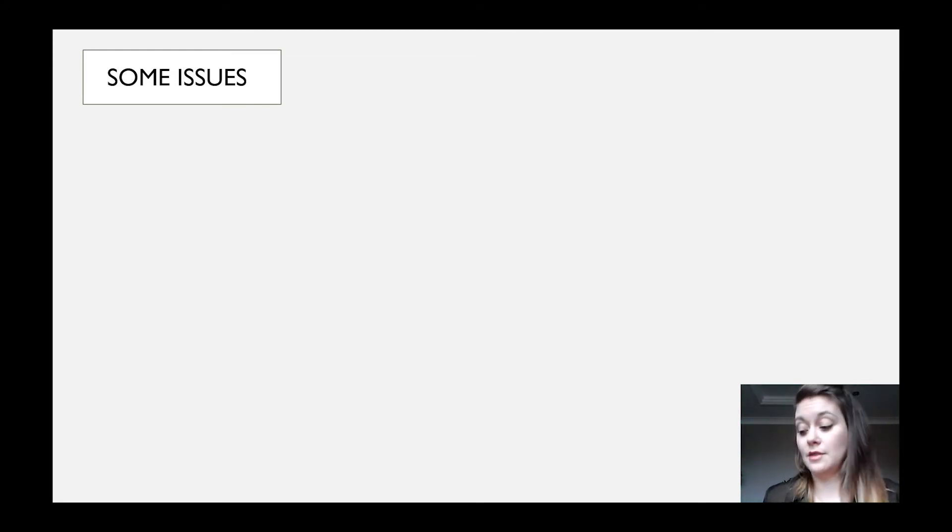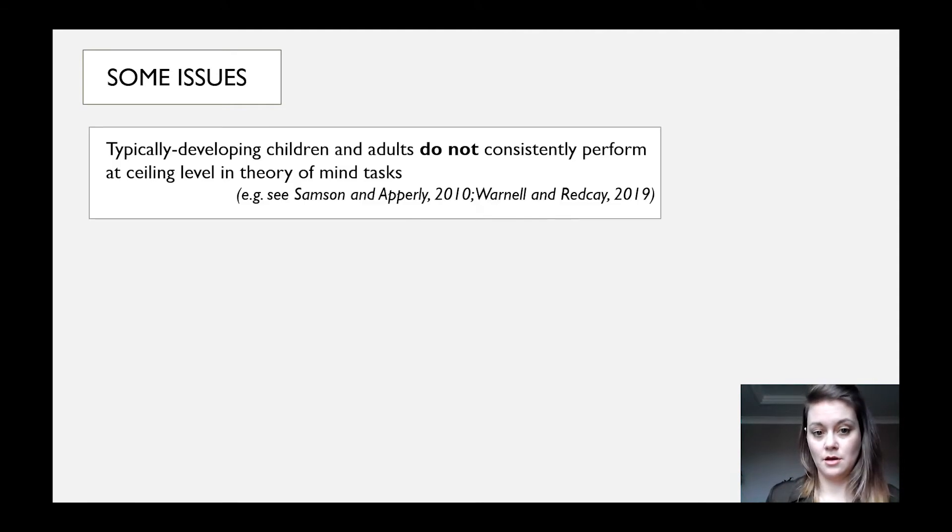For a long time it's been taken as fact that autistic people possess cognitive deficits that result in the inability to detect or make sense of the mental states of others. But there are some issues with this theory that have come out of research as it's progressed. Firstly, the idea that typically developing children and adults consistently perform at ceiling level in theory of mind tasks has now been challenged.